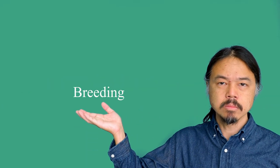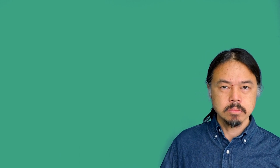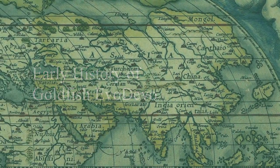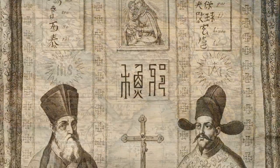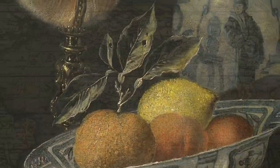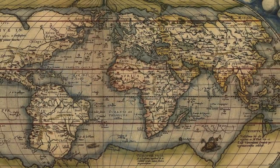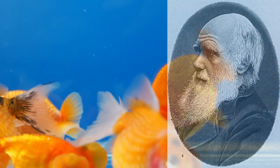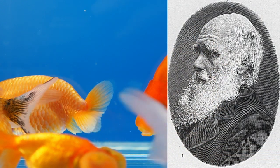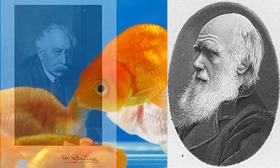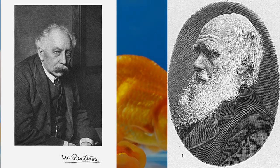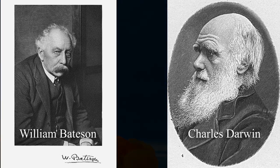We have mainly focused on the history of goldfish breeding. From now on, I would like to talk about the early history of evolution and developmental biology of goldfish. From the Ming Dynasty onwards, people from the West began to actively come to China, and various goldfish strains were introduced to Western society. With the spread of these goldfish varieties, scientists at the beginning of evolutionary studies observed the different types of goldfish. The unique morphologies of ornamental goldfish fascinated two of the most influential early biologists: Charles Darwin and William Bateson.